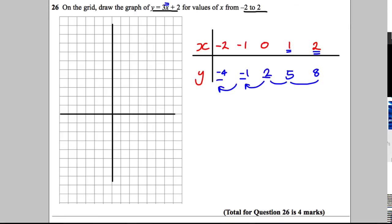So what we're going to plot, we're going to plot the point (-2, -4), we're going to plot (-1, -1), we're going to plot 0 and 2, we're going to plot 1 and 5, and we're going to plot 2 and 8.